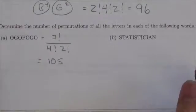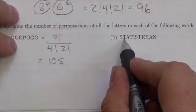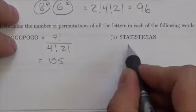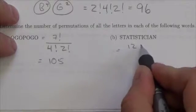Now, let's take a look at the word statistician. Okay, there's one, two, three, four, five, six, seven, eight, nine, ten, eleven, twelve letters here.